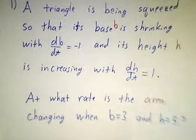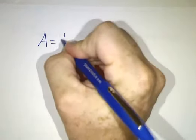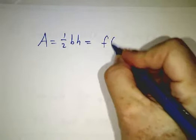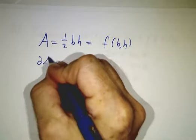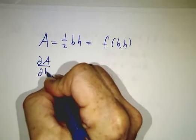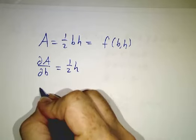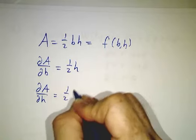The first thing we do is write down our equations. The area of a triangle is A = (1/2)bh, which is a function of b and h. When we take partial derivatives, ∂A/∂b = (1/2)h and ∂A/∂h = (1/2)b.